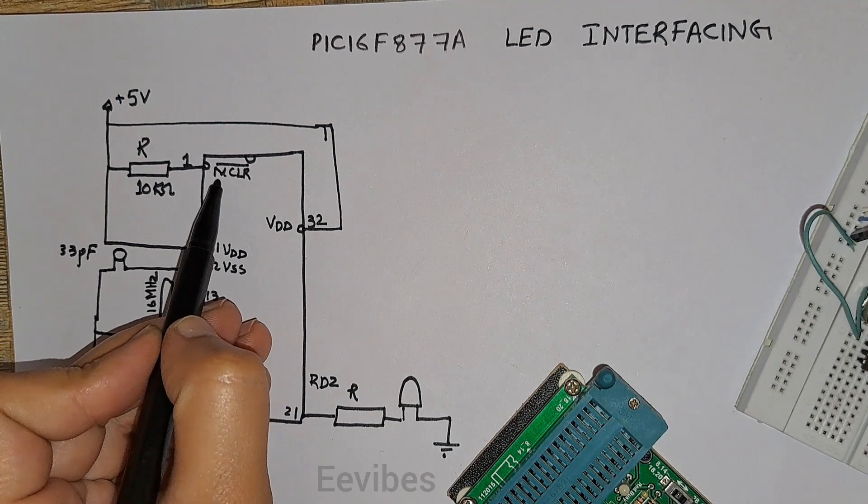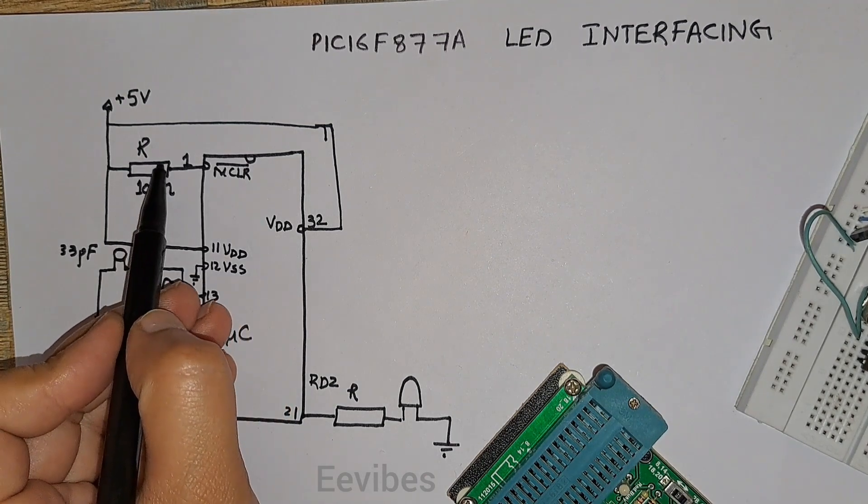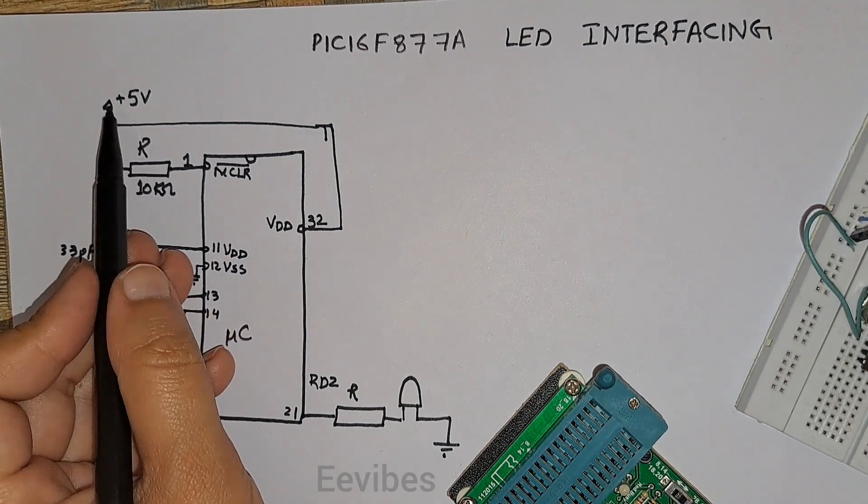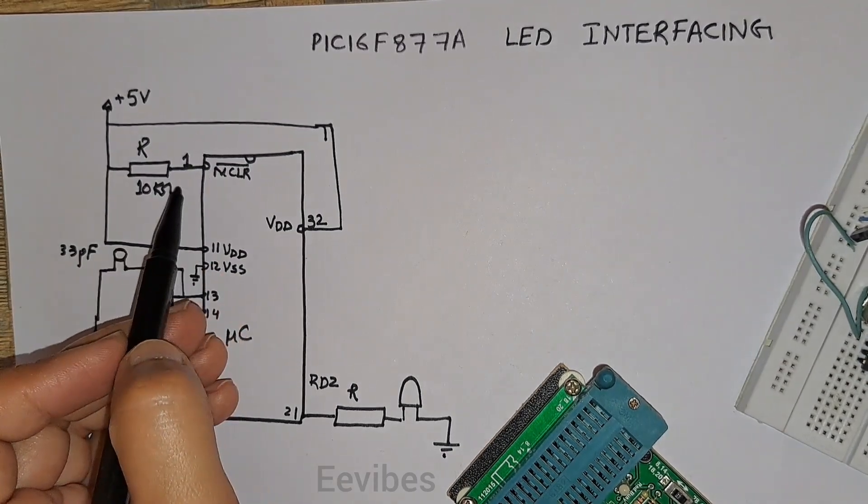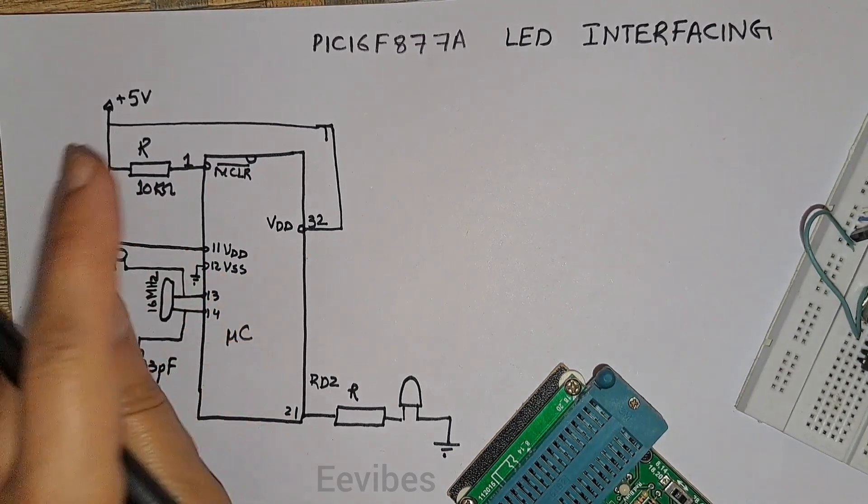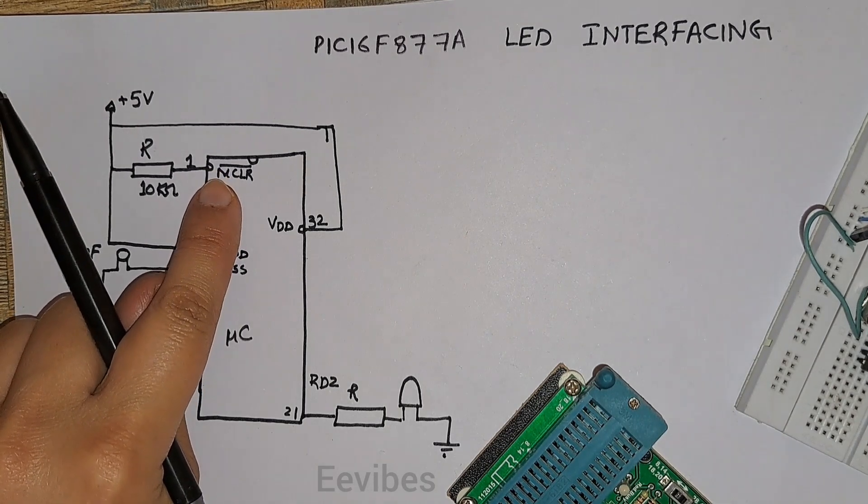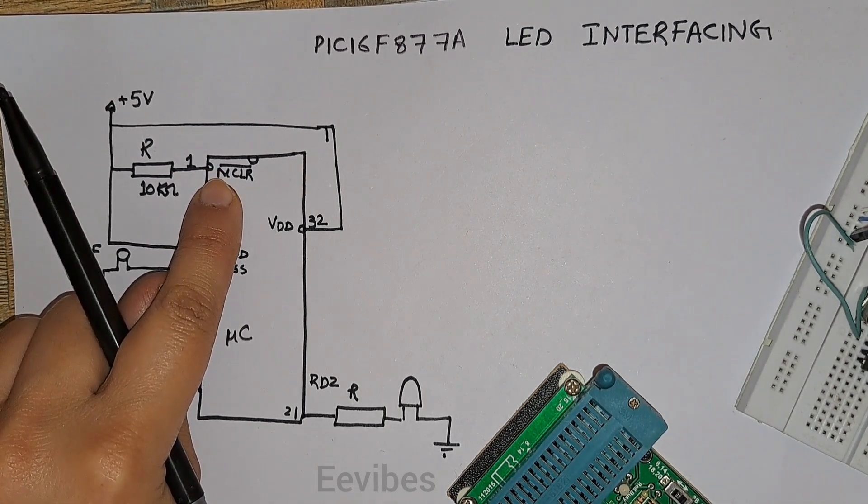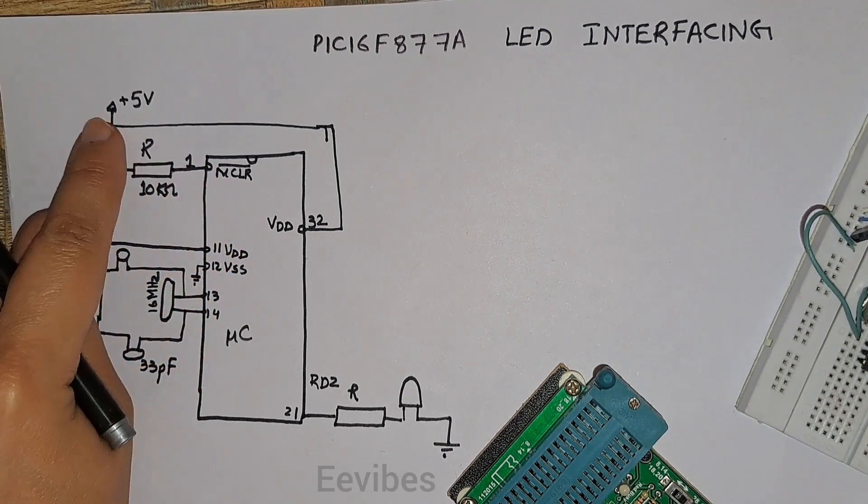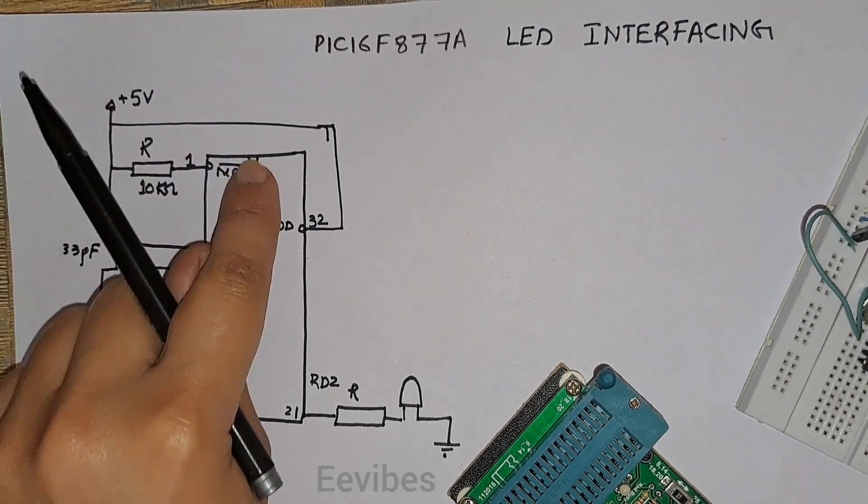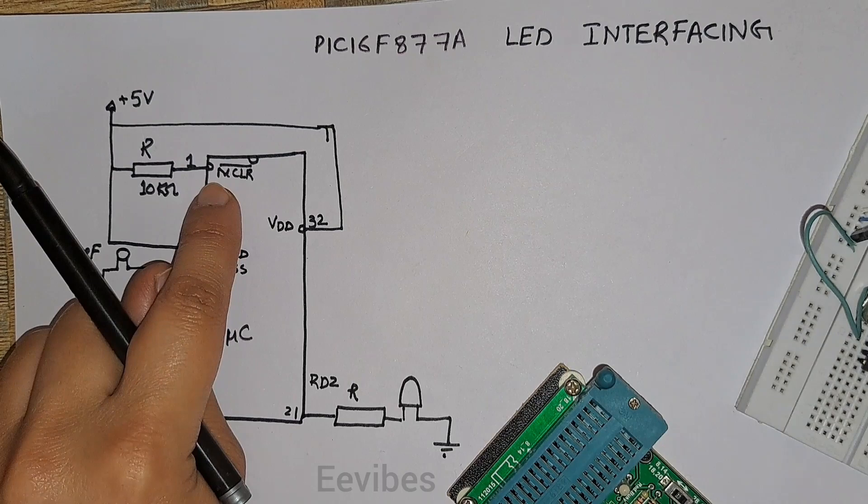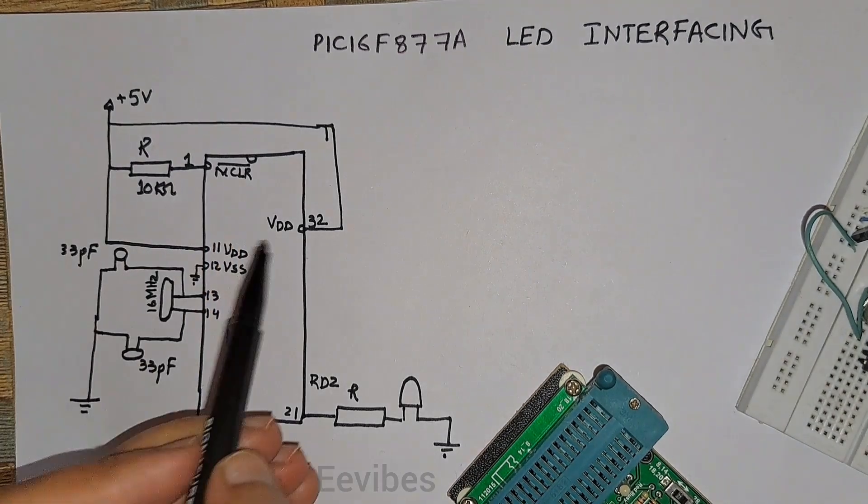This is actually for resetting the microcontroller and it is always active low. But we don't want the microcontroller to reset itself and suspend all the operations, so that's why we provide a high logic just to deactivate this reset pin.